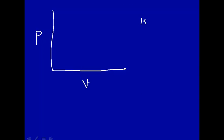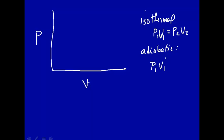Remember from isothermal, the relationship between P and V is P1V1 is equal to P2V2. And remember for adiabatic, it was P1V1 raised to the gamma power is equal to P2V2 raised to the gamma power.